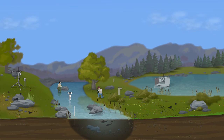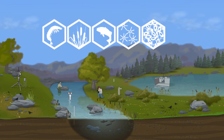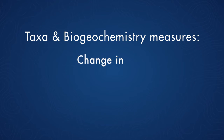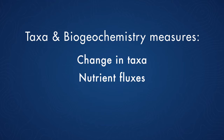Similarly, for the aquatic observational system, we have a suite of aquatic taxa as well as biogeochemistry and ecohydrology that will allow us to measure changes in those different taxa and in the pools and fluxes of nutrients and carbon that we see at these sites, in order to get a full characterization of those aquatic systems.